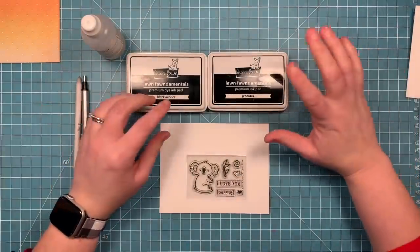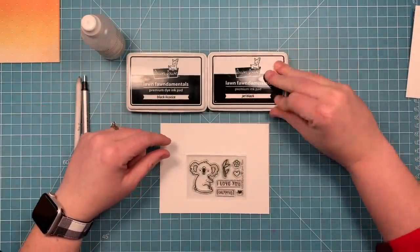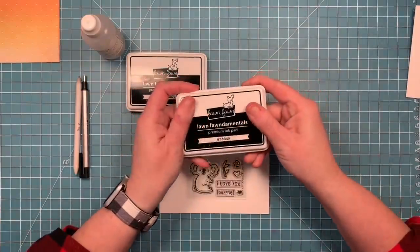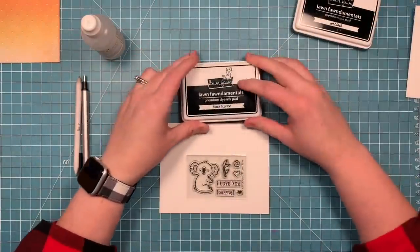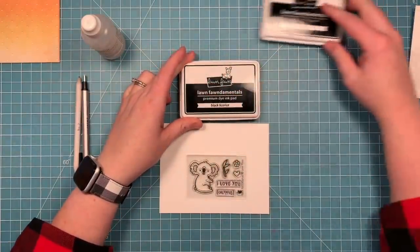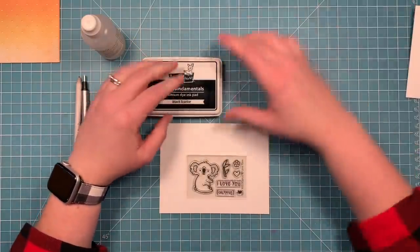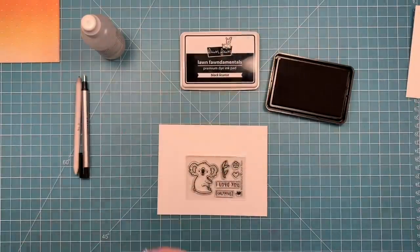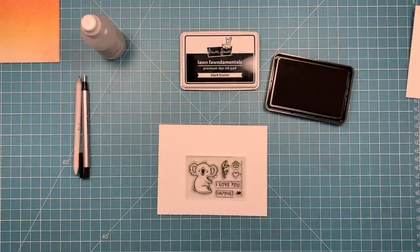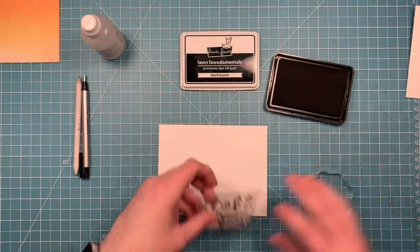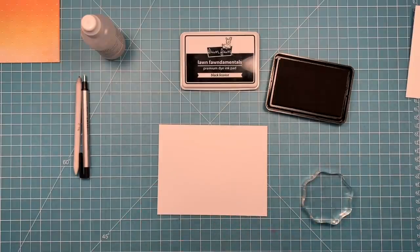When you are doing colored pencils and Gamsol, you can use the jet black ink that we use with watercoloring and Copics, but you can also use the black licorice because it will not run. That's actually what I'm going to use in this project. I think it has a really nice crisp black line.